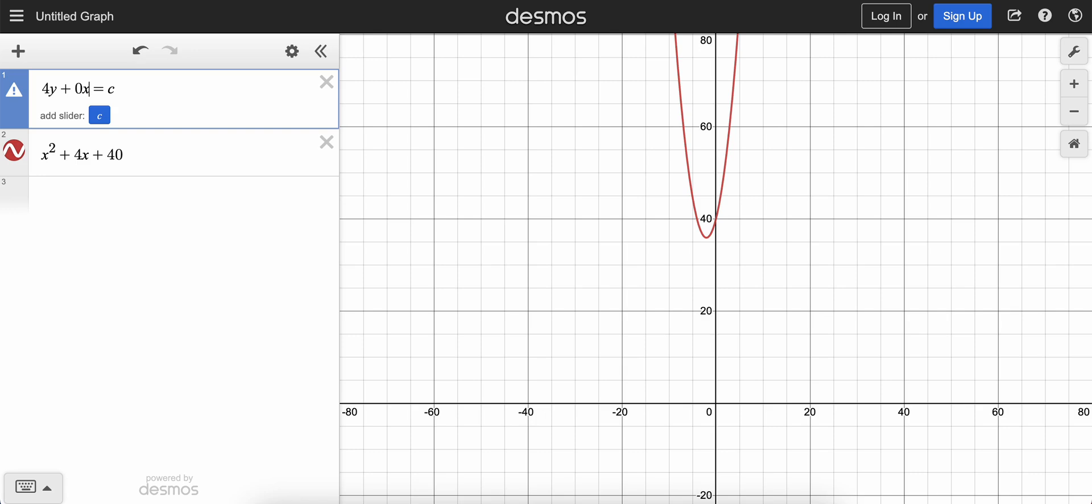0 times x is just 0. So really, I didn't change the equation, but I put in an x, and it made Desmos happy. And you could see that now it's okay.